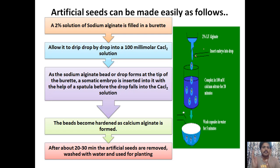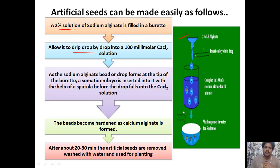The following steps show how artificial seeds can be made. In step one, a 2% sodium alginate solution is filled in a burette, then allowed to drip drop by drop into a 100 millimolar calcium chloride solution. As the sodium alginate drops from the tip of the burette, a somatic embryo is inserted into the forming drop with the help of a spatula.